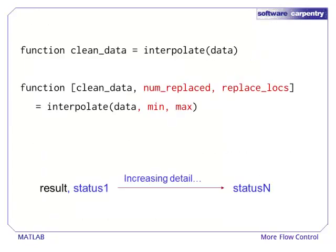Our new function will accept an optional minimum and maximum acceptable value. It will also declare that it can return up to three values. The second return value is the number of locations we replaced. The third return value is the set of indices of locations that we replaced.